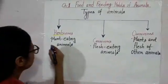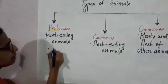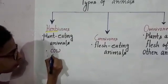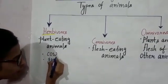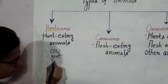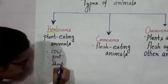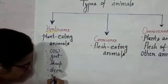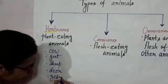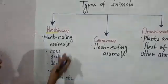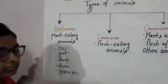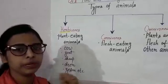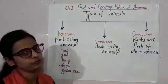Let us write some examples. The common examples are deer, cow, goat, sheep, zebra, etc. All these animals eat only plants. It may be the leaves of the plant, it may be roots of the plant, it may be any part of the plant.